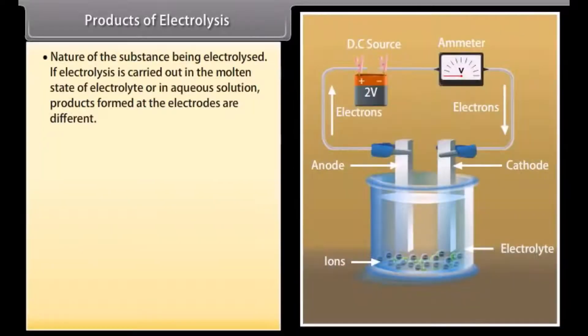Products of electrolysis depend mainly upon the following factors: nature of the substance being electrolyzed. If electrolysis is carried out in the molten state of electrolyte or in aqueous solution, products formed at the electrodes are different. The type of electrodes being used. If the electrode used is inert, it does not take part in the reaction. Or if the electrode is reactive, it takes part in the electrode reaction.